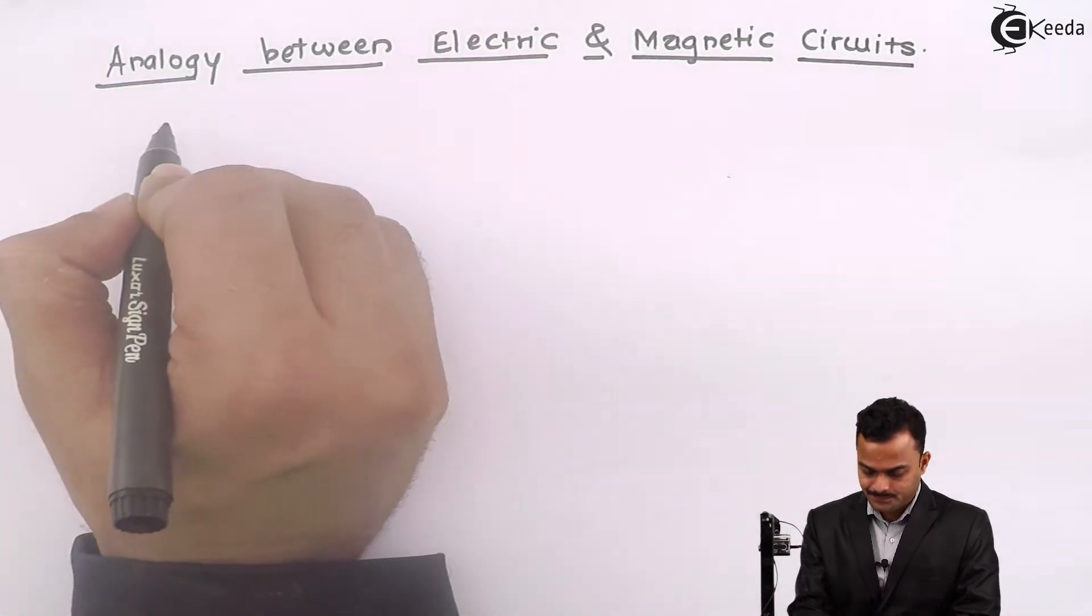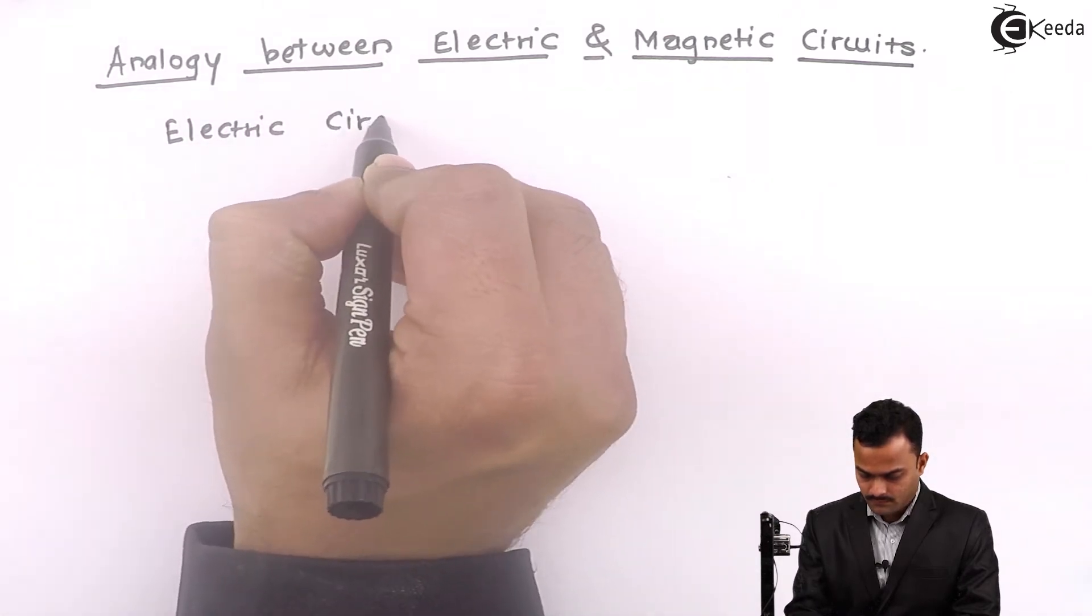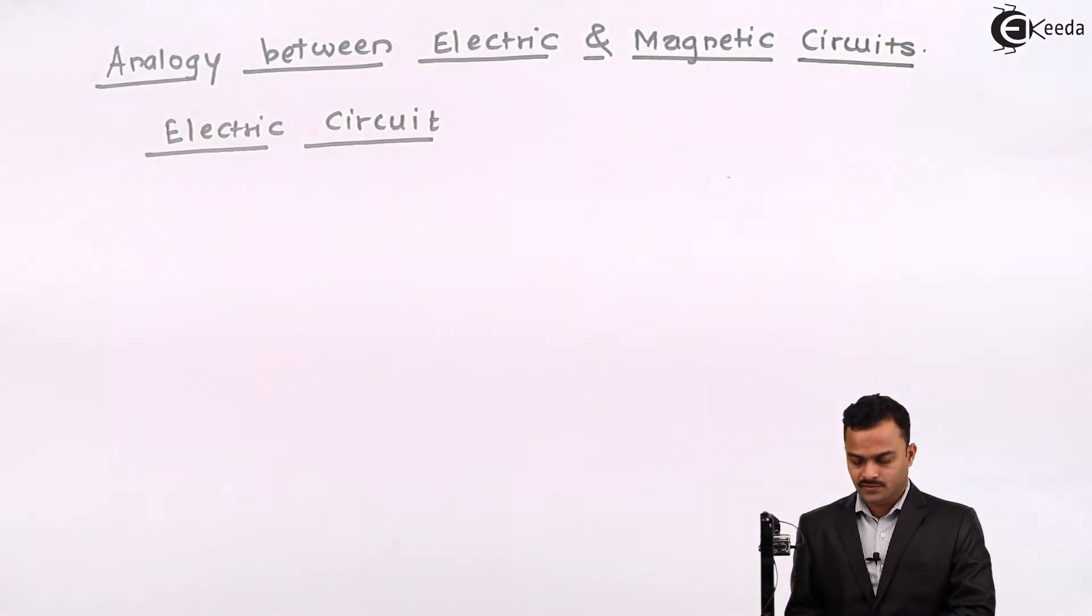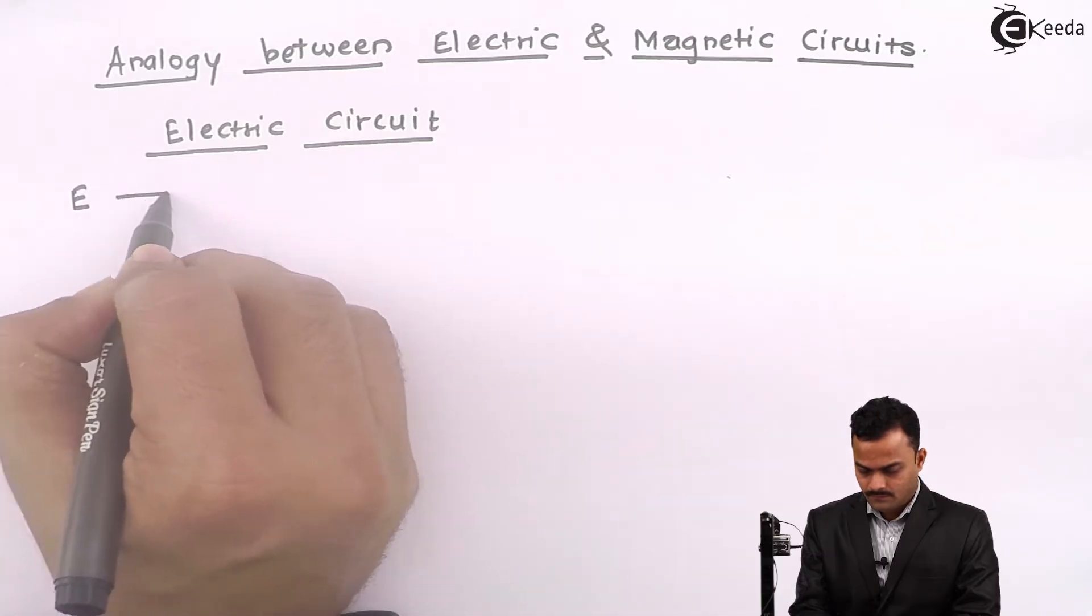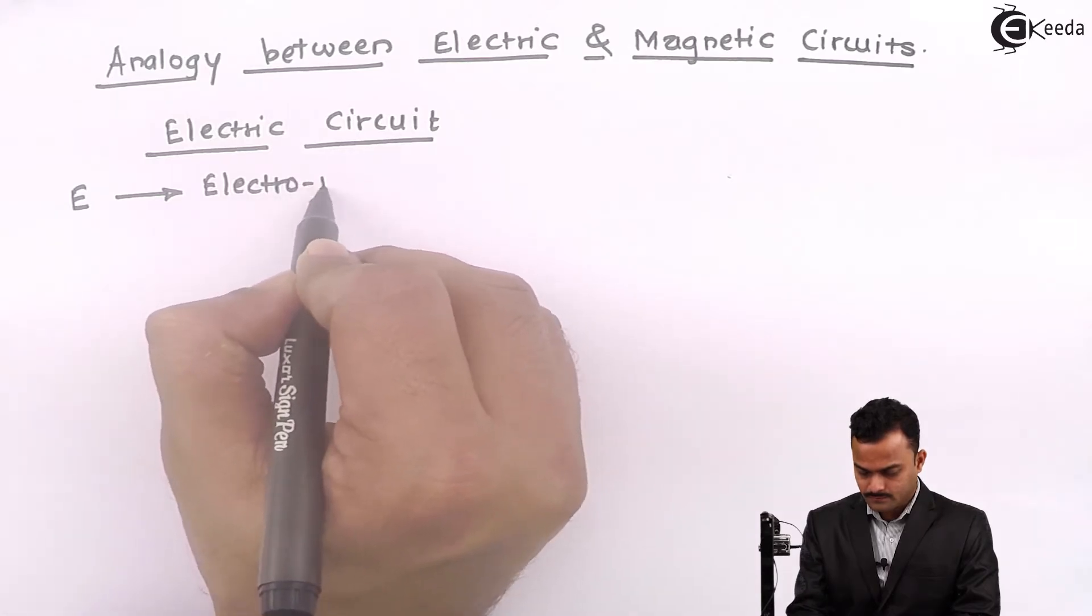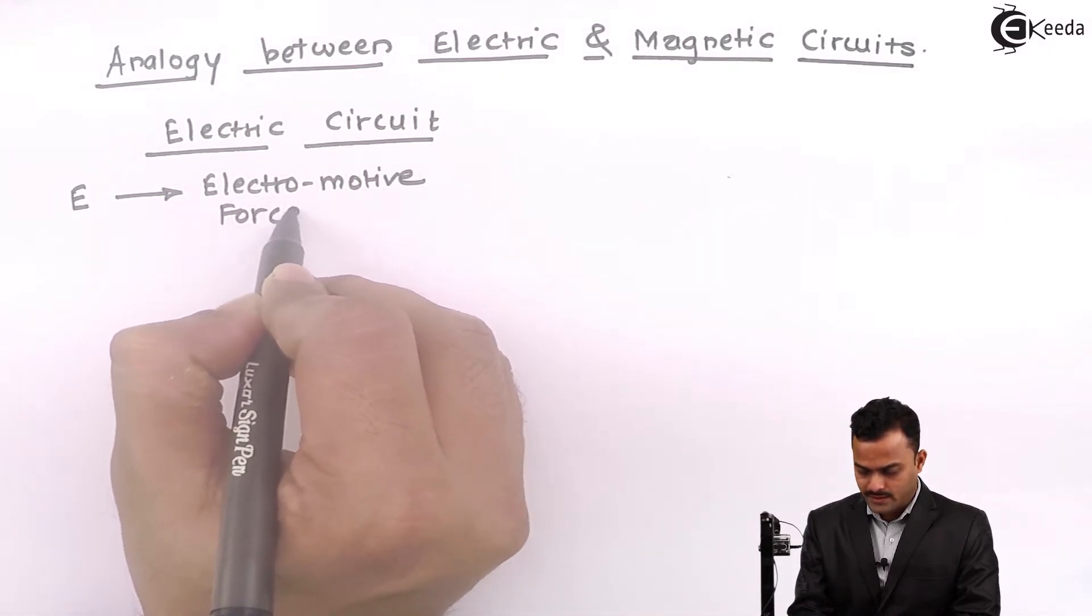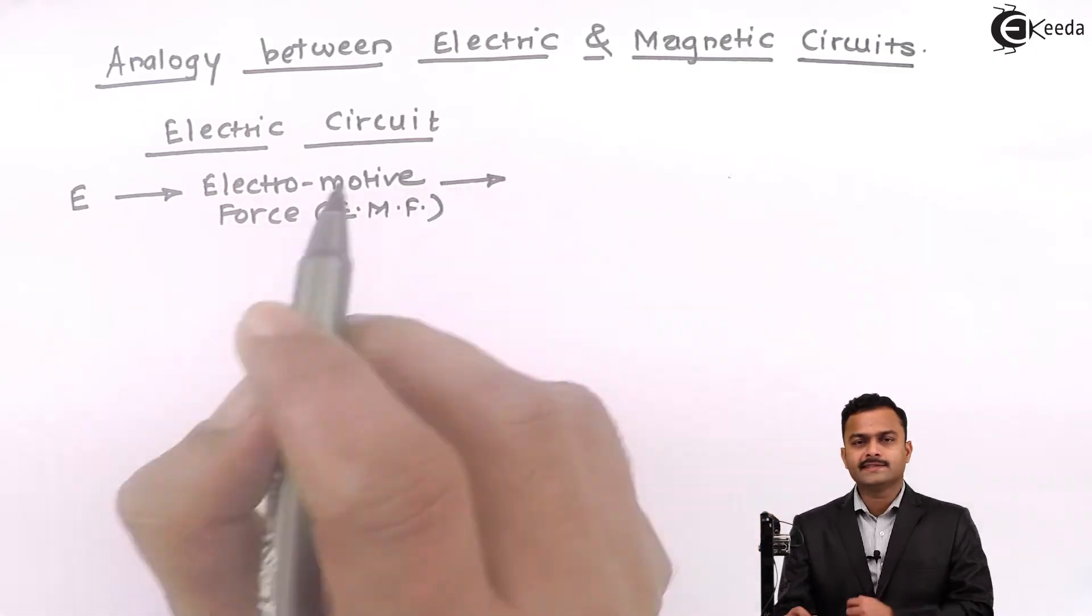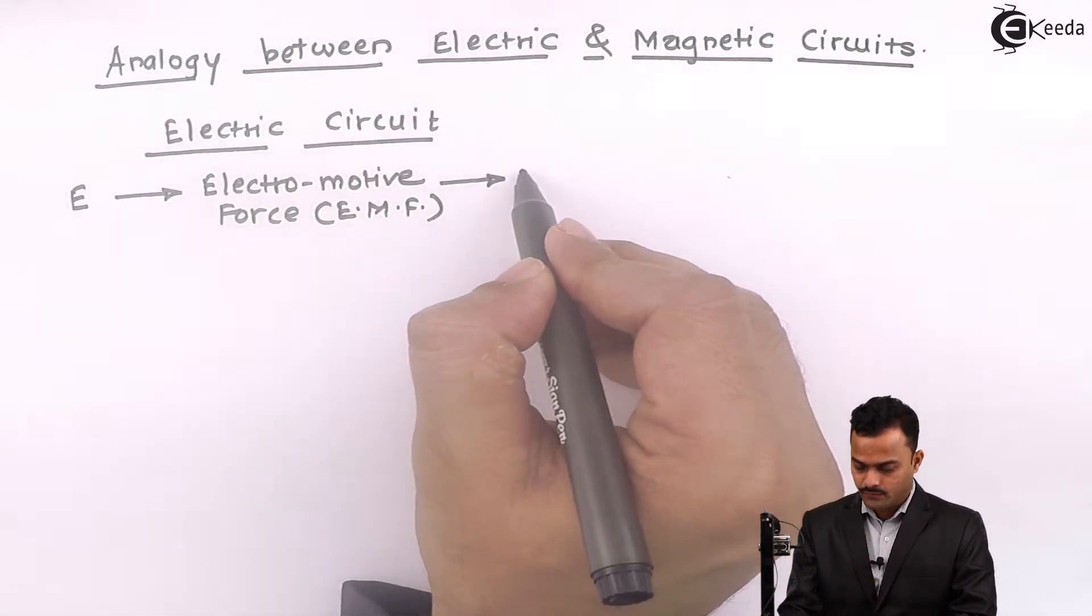Now in electric circuit, we have few concepts. First one is E. This is nothing but electromotive force, popularly known as EMF. It is the force required to produce electric current and the unit is Volt.